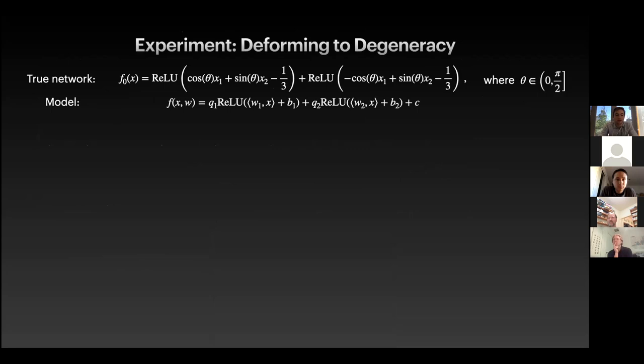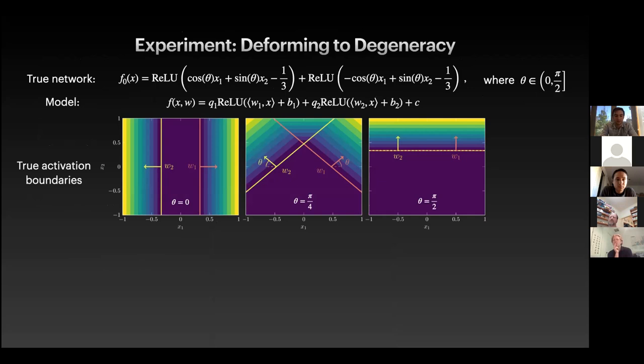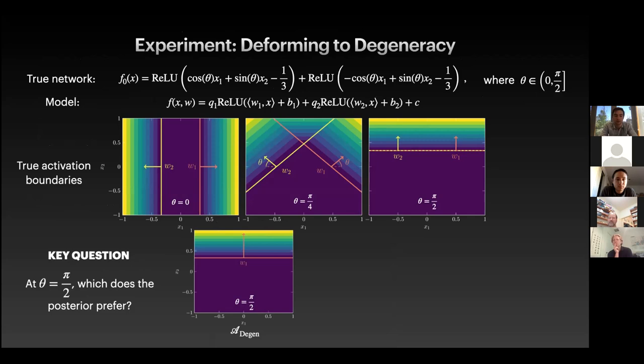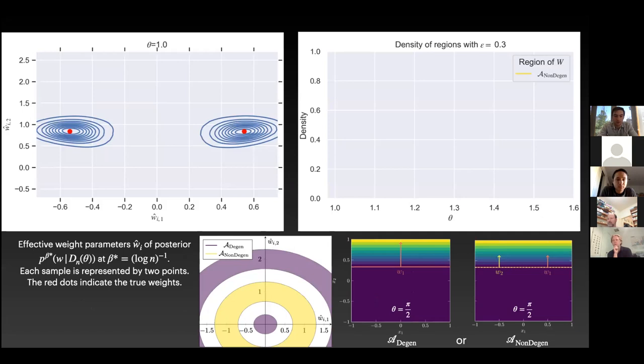We sample parameters from the posterior at a particular inverse temperature as given by Watanabe's work. And we use Markov chain Monte Carlo methods to do this, Hamiltonian Monte Carlo in particular, and we change the theta value as we go through, which changes the underlying true distribution. For each theta, we performed eight trials that had 20,000 samples in each, and this took about two weeks total compute time to actually get these results. And then the posterior that you will see is averaged over validated trials that just use some standard statistical outlier stuff. Now, since the scaling and permutation symmetries are generic, we are going to quotient them out.